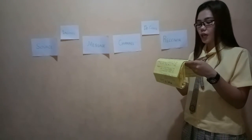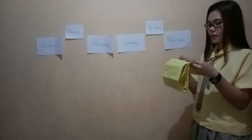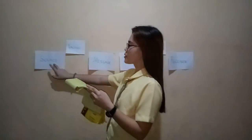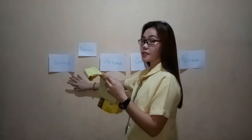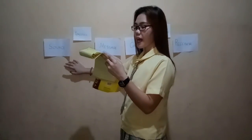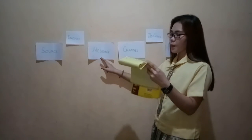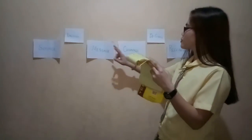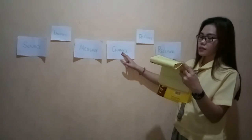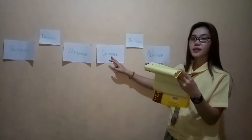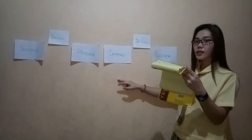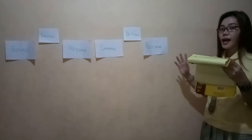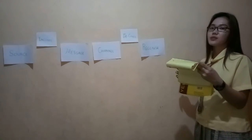Elements of Berlo's SMCR model — the channel uses the five senses: hearing, seeing, touching, smelling, and tasting. The source originates communication using communication skills, knowledge, social system, culture, and attitudes. It encodes the message, which is composed of content, elements, treatment, structure, and code. It goes through the channel using the five senses to the receiver, who decodes it using communication skills, attitudes, knowledge, social system, and culture. Thank you.